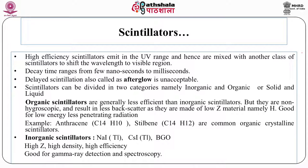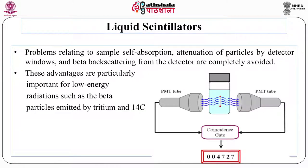These scintillator detectors are good for gamma ray detection and spectroscopy. For liquid scintillators — if there is very low energy radiation such as beta radiation from a certain source, beta radiation may not be able to penetrate into the detector to its sensitive volume. So the radiation-emitting source is mixed with the liquid scintillator, which then emits light that comes out of a transparent container and falls on photomultiplier tubes or photodiodes. Liquid scintillators are particularly advantageous for low-energy radiation such as beta particles emitted by tritium and carbon-14.